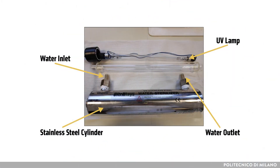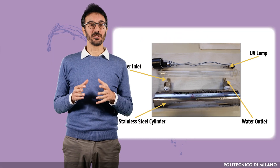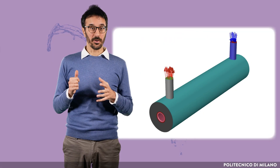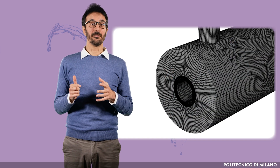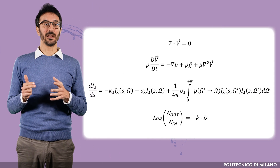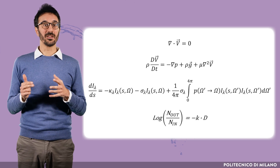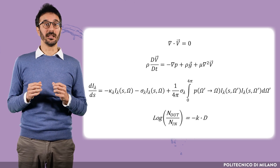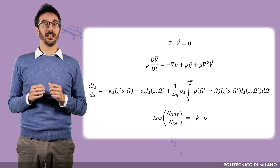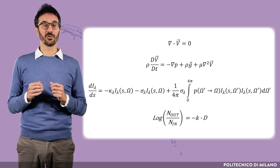Let's model a typical pressurized vessel for UV disinfection. It is a stainless steel cylinder in which water flows from one side to the other. During its passage, the water is irradiated by the UV lamp positioned in the middle, and the pathogens are inactivated. The sequence for modeling such a reactor is: reproduce the geometry in the virtual environment; create the mesh; define and solve the characteristic equations — in this case, the Navier-Stokes equation for fluid dynamics, the radiative transfer equation for UV propagation, and the Chick-Watson equation for pathogen inactivation.